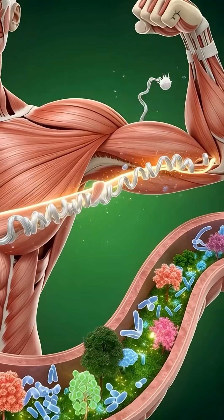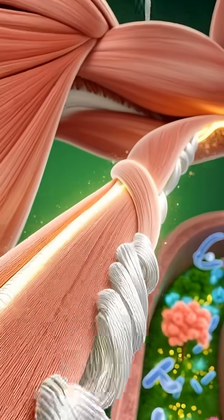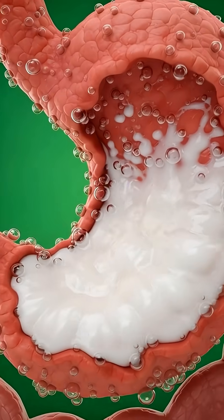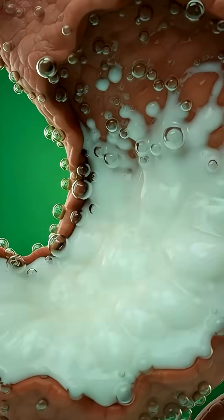Here, tiny villi absorb the nutrients. Protein, calcium, vitamin D. These glowing particles enter the bloodstream.